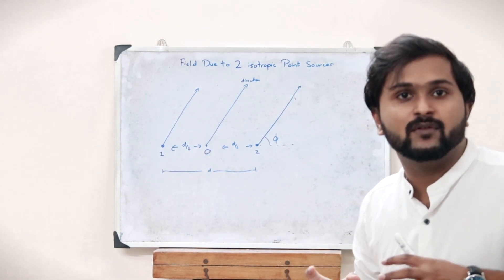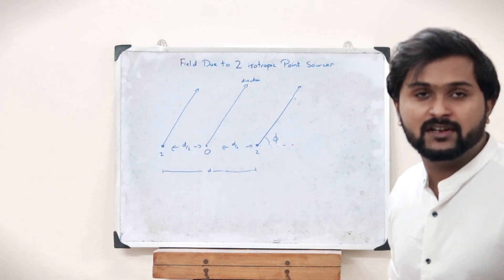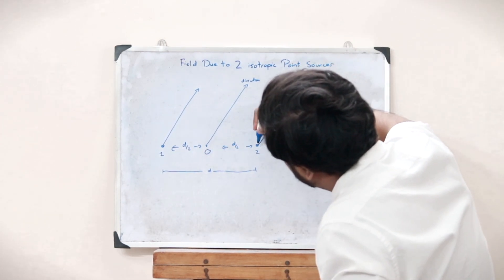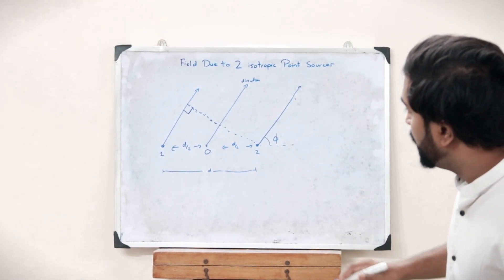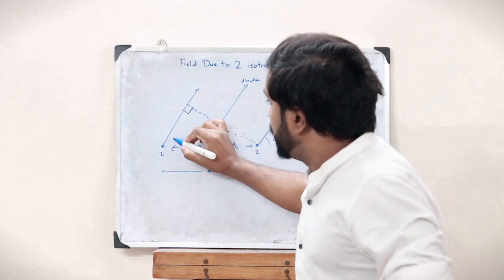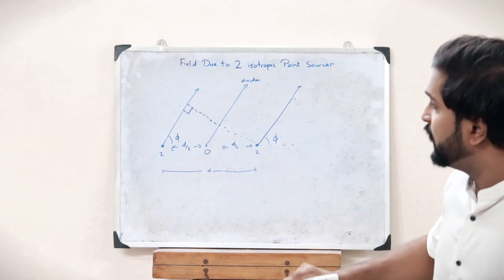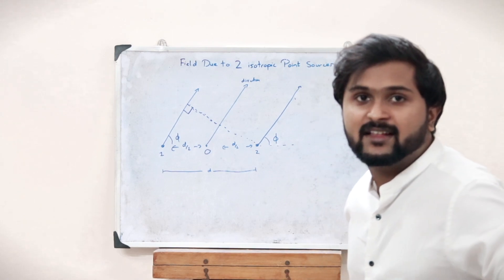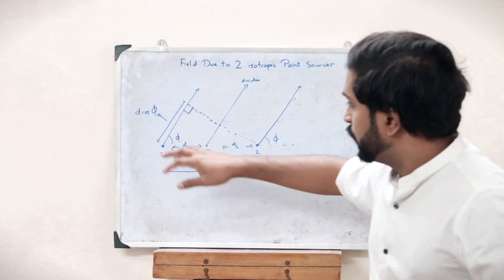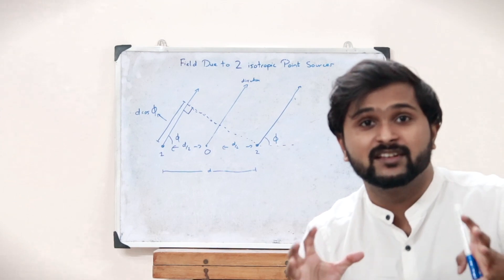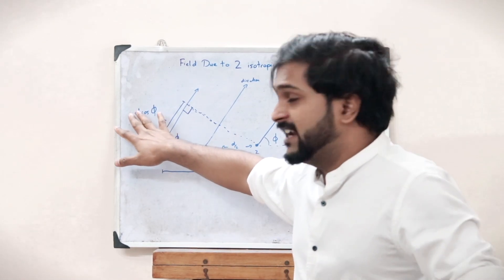To find the lag by which source 1's radiation lags behind source 2's radiation, we drop a perpendicular from the source onto the direction of radiation. This gives us a 90-degree angle, and since the radiation happens at angle phi with respect to the axis, this particular path difference is given as d cos phi.